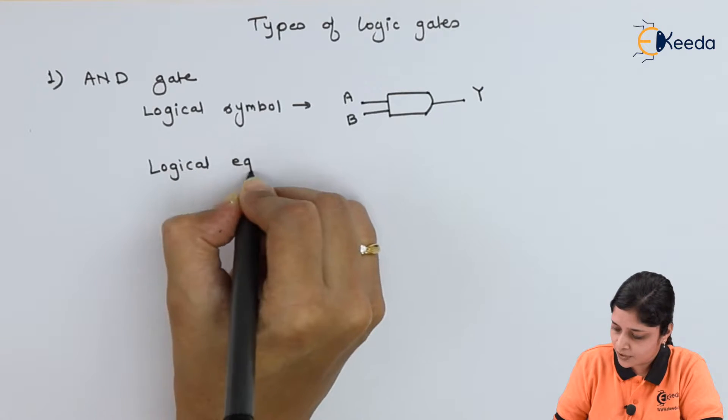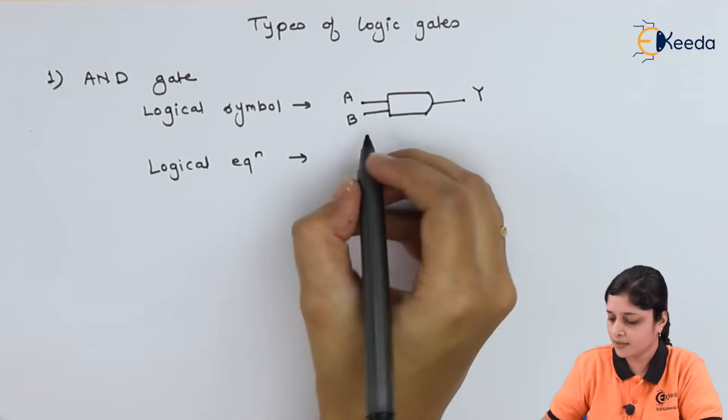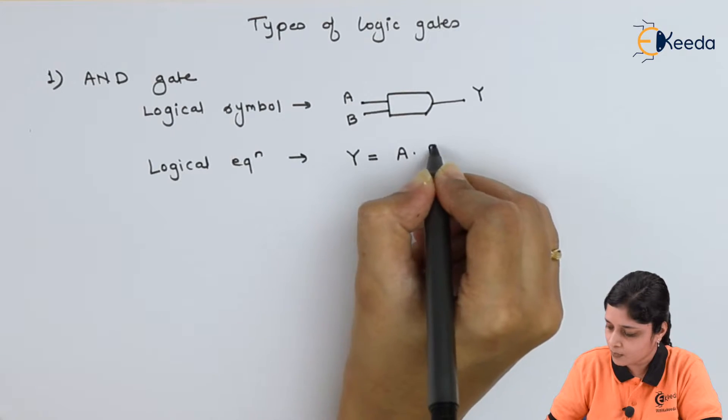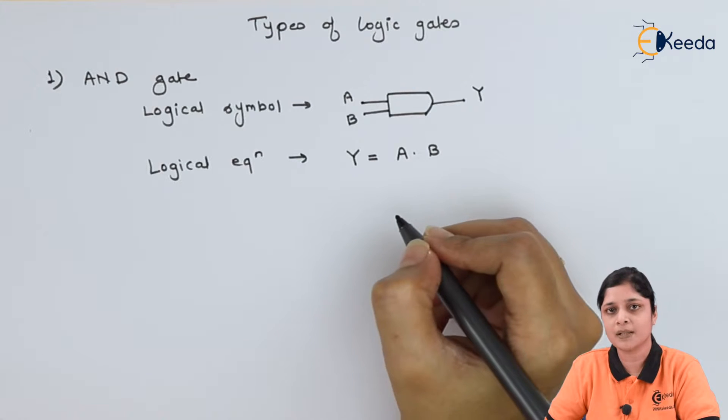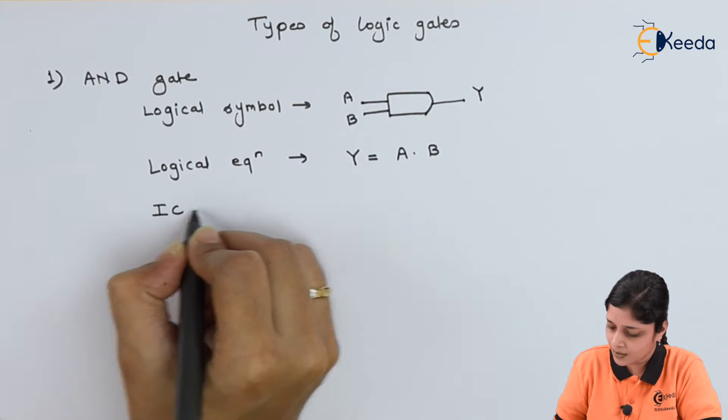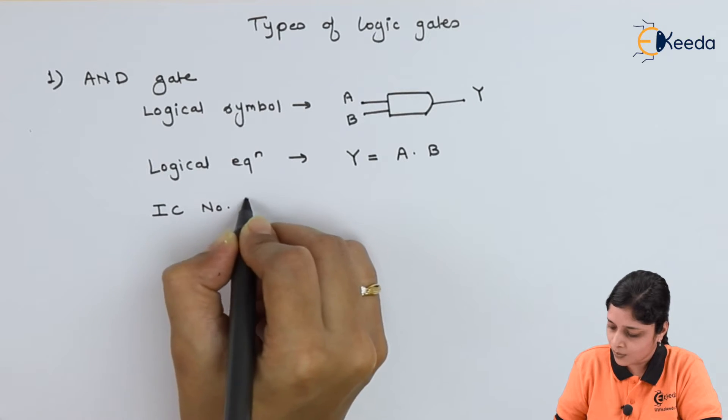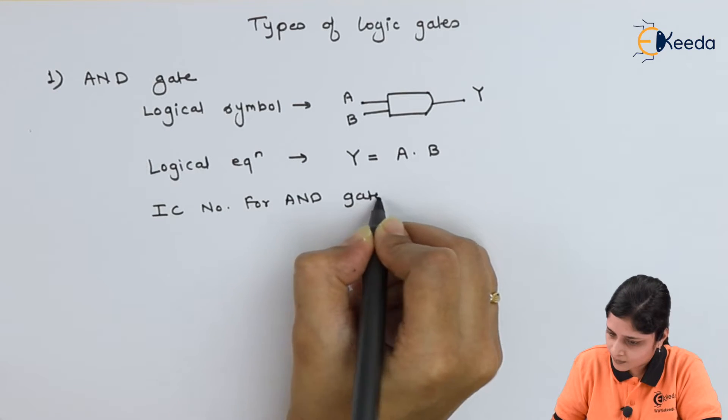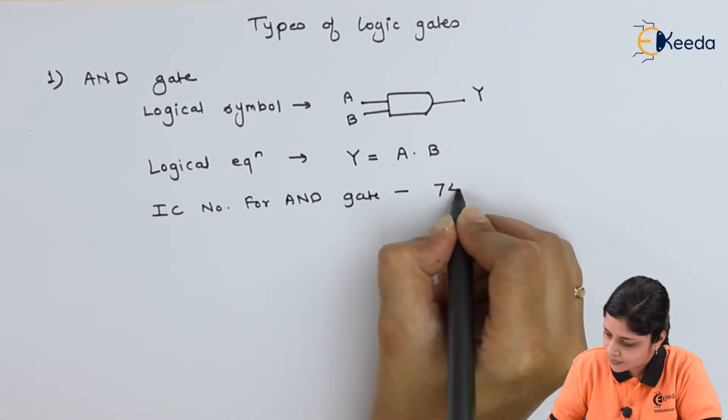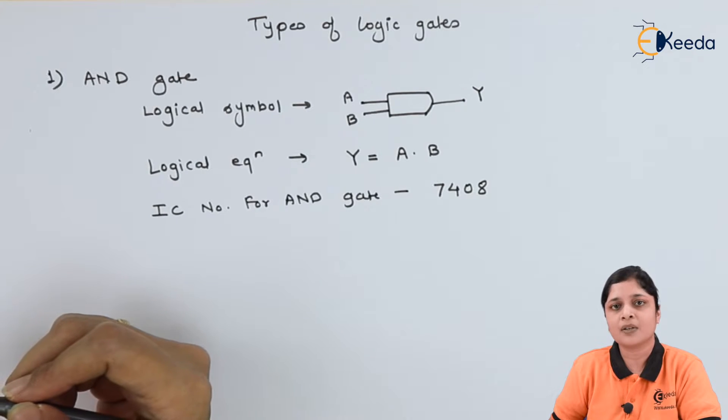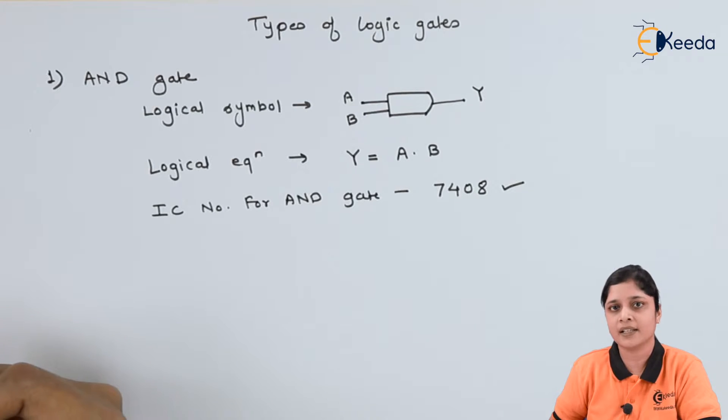Logical equation for AND gate is Y equals to A dot B. So here logical multiplication is achieved. IC number for AND gate is 7408.